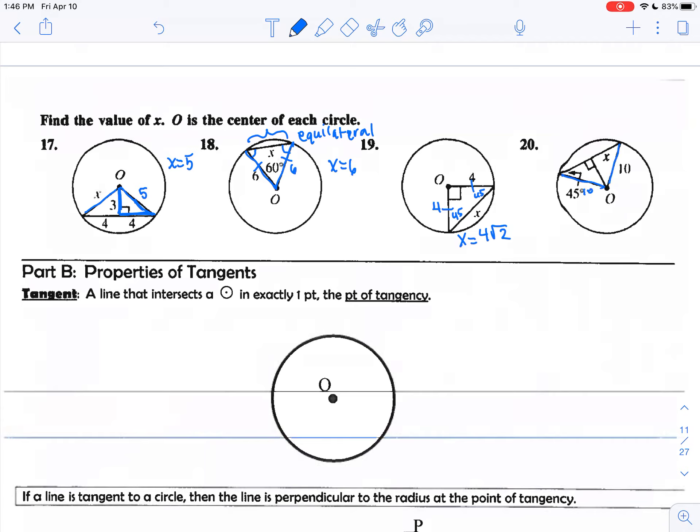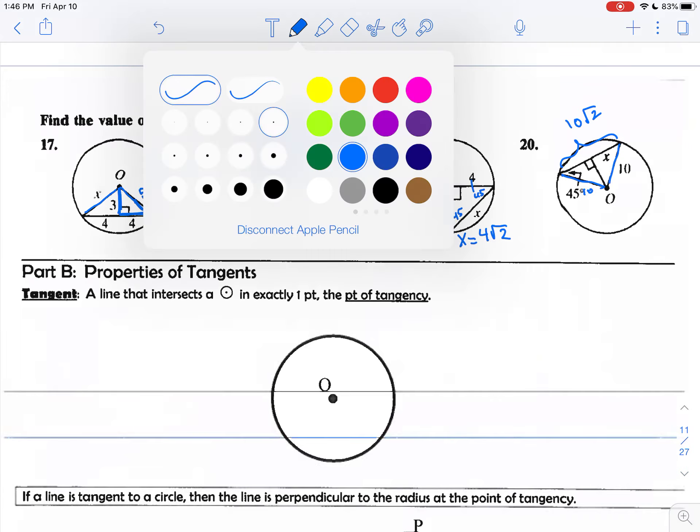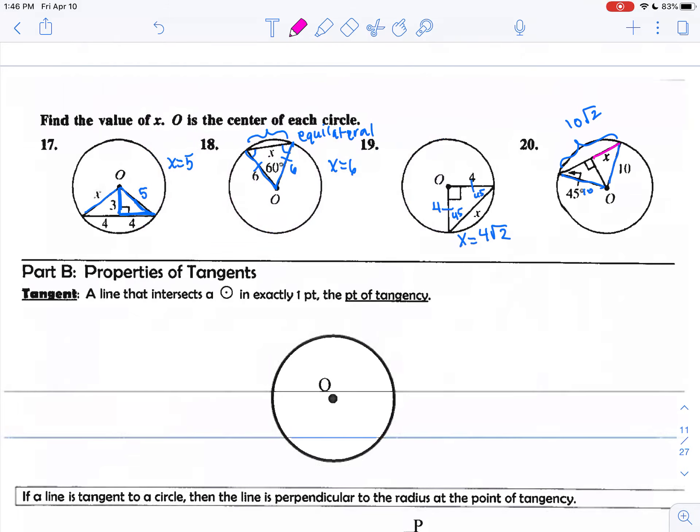Same situation here, you have the radius is 10, this is 10. So to get to this value here, which is the hypotenuse of that 45-45-90 triangle, you multiply by root two. So the question is, if X is just this portion right here, what's the value of X?